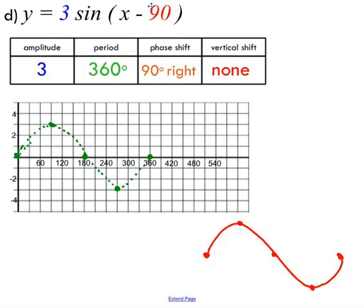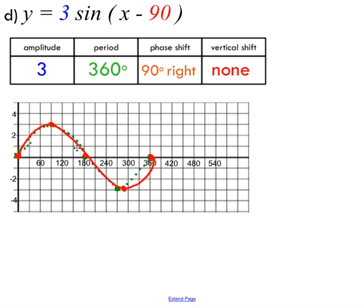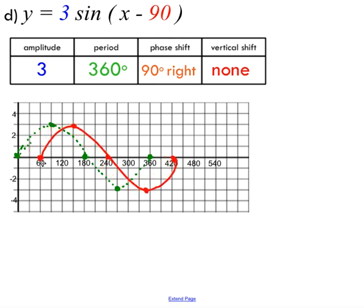This is the first example with a phase shift. I've already accounted for the amplitude of three by stretching the graph. Since the period is the same, all I have to do is pick up the function — three sine x — and move every point to the right by 90 degrees. So the point at zero moves to 90, and the entire graph shifts right by 90 degrees.